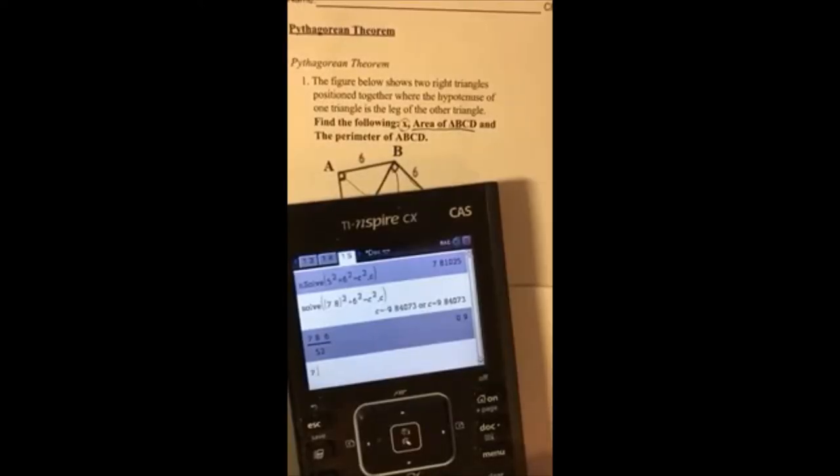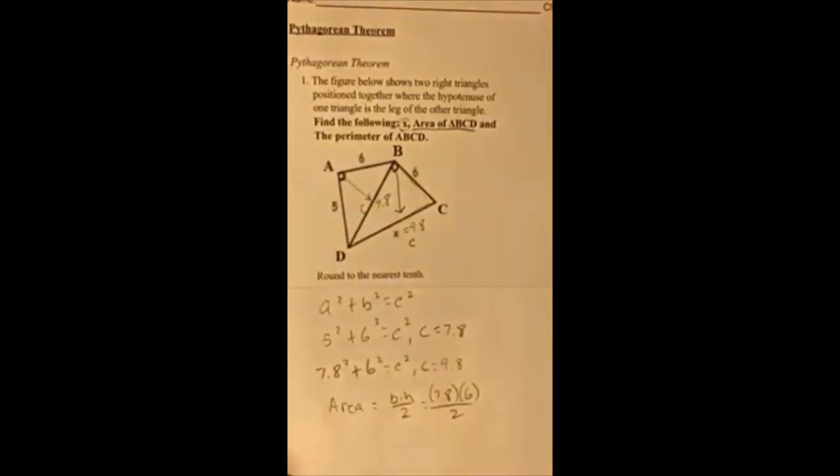So that's just 7.8 × 6 ÷ 2 = 23.4. So that's 23.4 for the area.